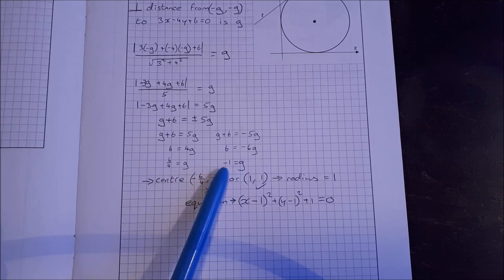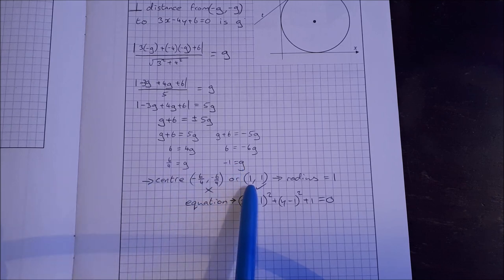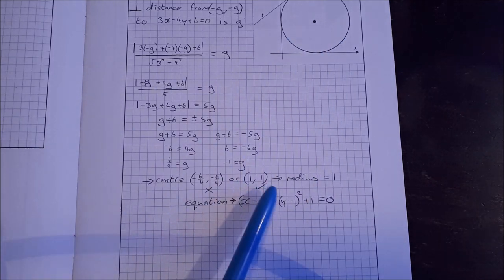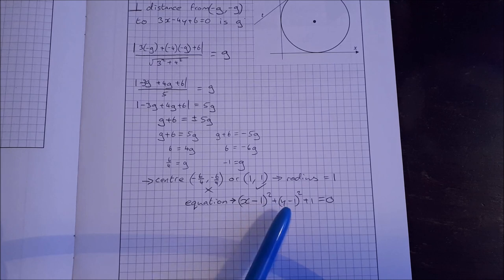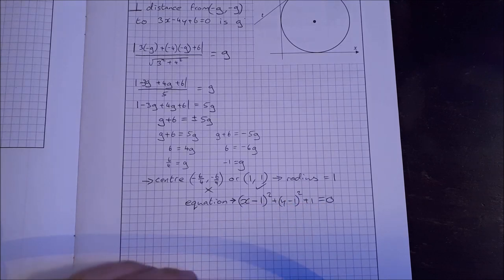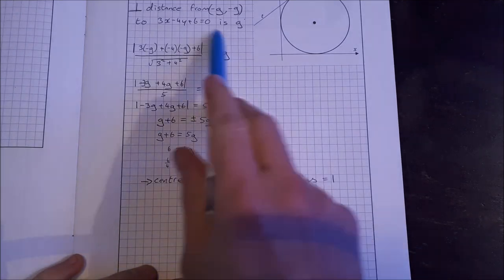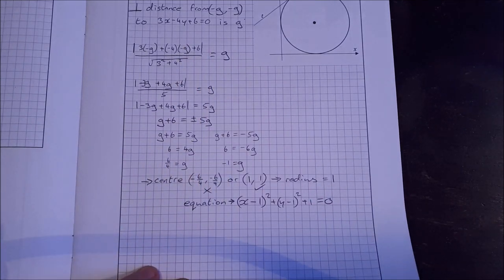So that means our equation is x minus 1 squared plus y minus 1 squared plus 1 is equal to 0. Any questions about the algebra there, just ask in the questions below.